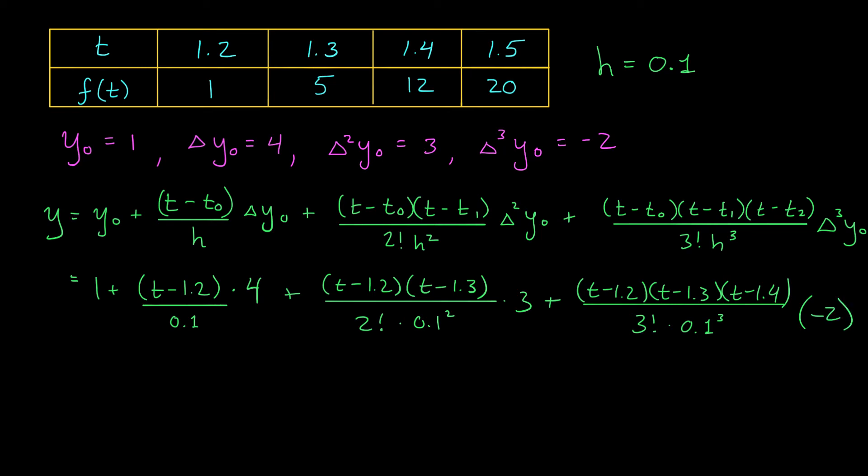Okay, so we'll clean this up a little bit, because there's lots that can be simplified. Here I see that I'm dividing by 0.1, which is the same as multiplying by 10. So my first two terms are 1 plus 40, t minus 1.2.